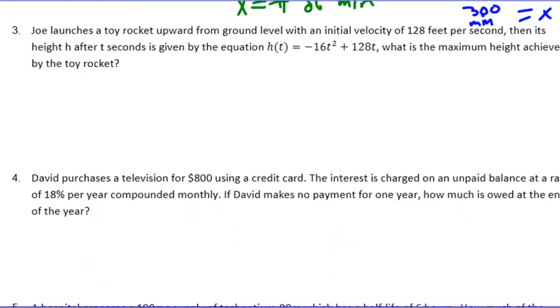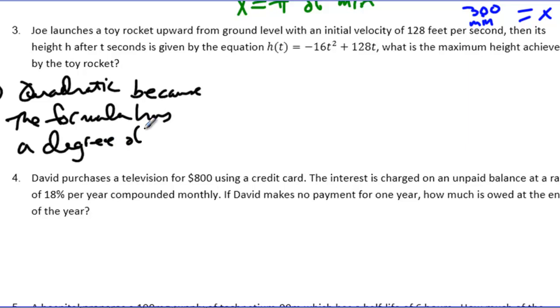Moving on. Joe launches a toy rocket upward from ground level with an initial velocity of 128 feet per second. Then its height after t seconds is given by the equation H(t) equals negative 16t squared plus 128t. What is the maximum height achieved by the toy rocket? Well, here's one of the good things about quadratic equations. Part A: when we did these type of word problems, we were always given a function or an equation to plug into or a formula. So we know right off the bat that this is quadratic because the formula has a degree of 2.